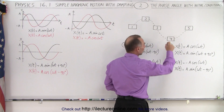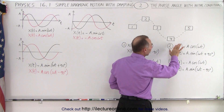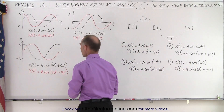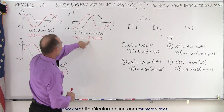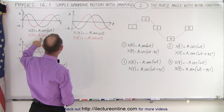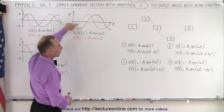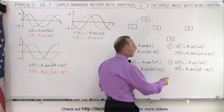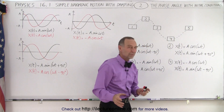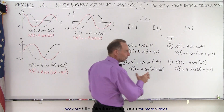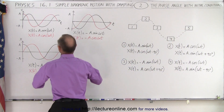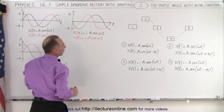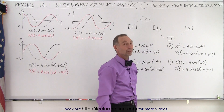For position four — the lowest point — we take the cosine function and flip it over, giving minus a cosine of omega t. Or we can use a sine of omega t minus 90 degrees, which means taking the sine function and moving it to the right by 90 degrees. So we take the black function, move it to the right 90 degrees, and we start at the very bottom on the way up — which is position four.